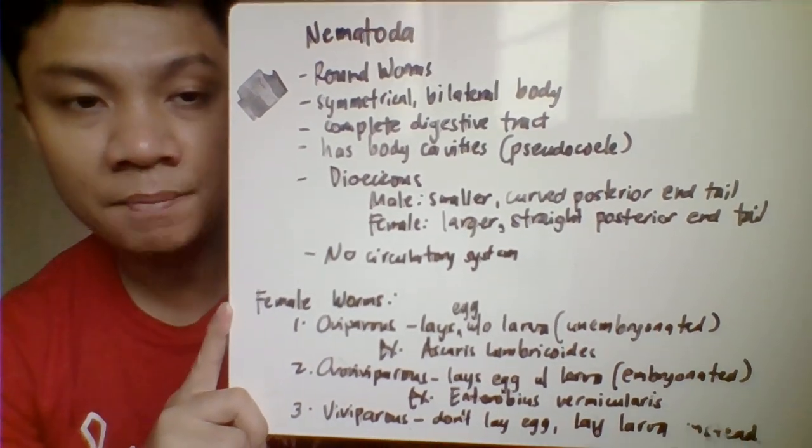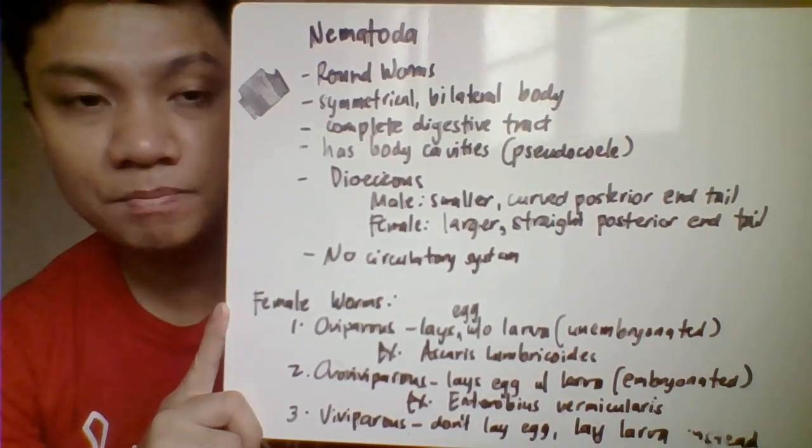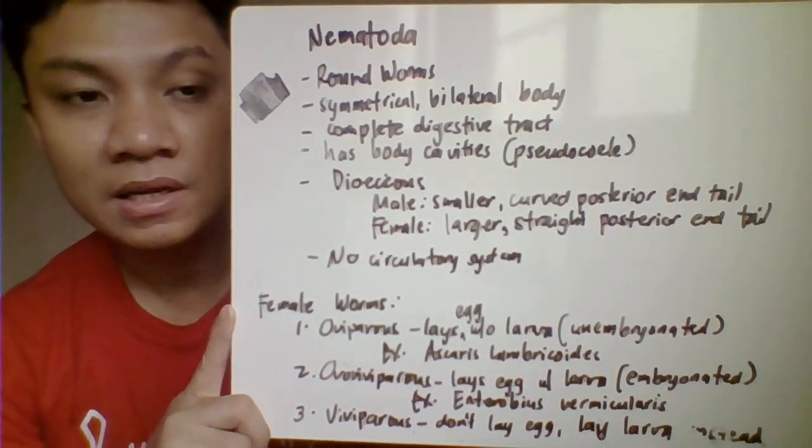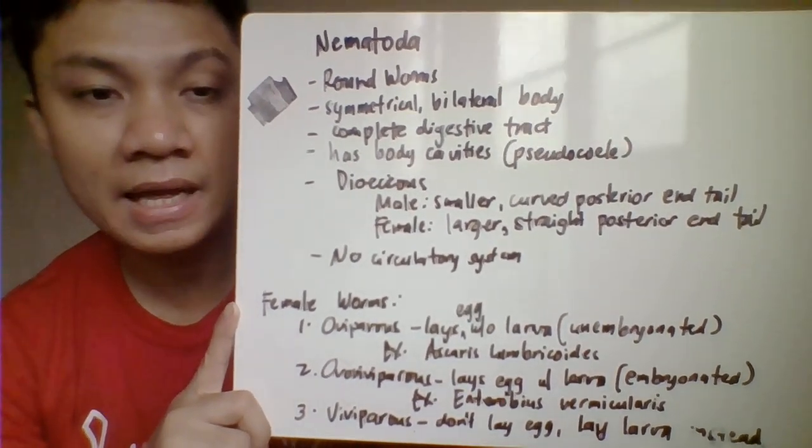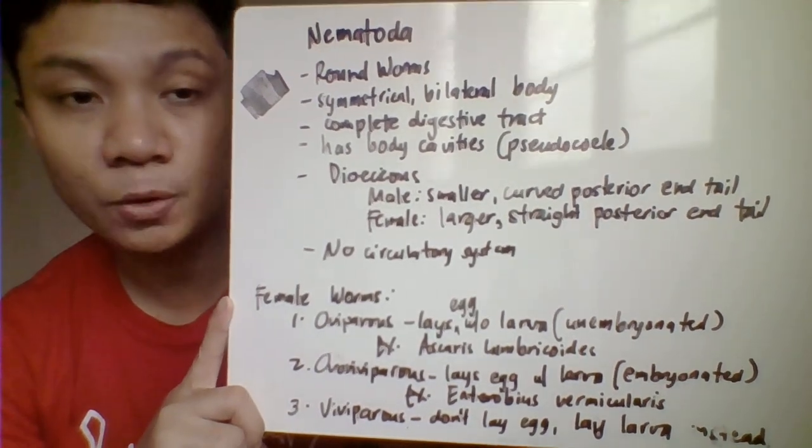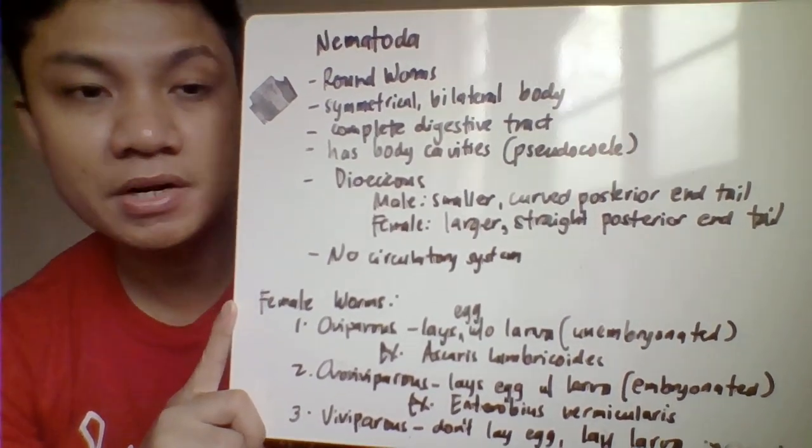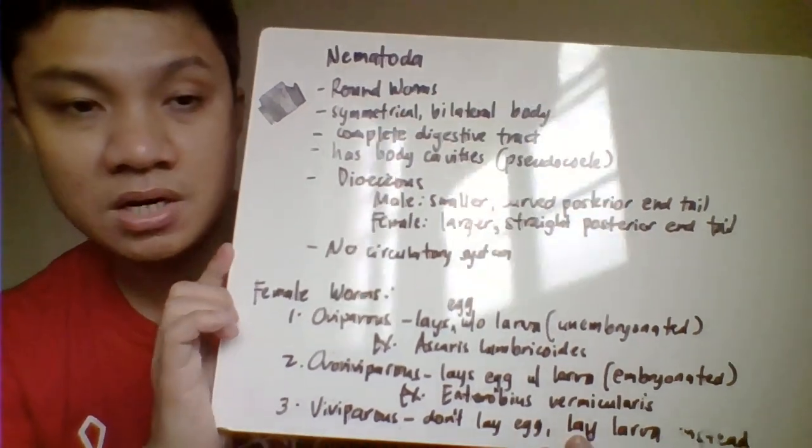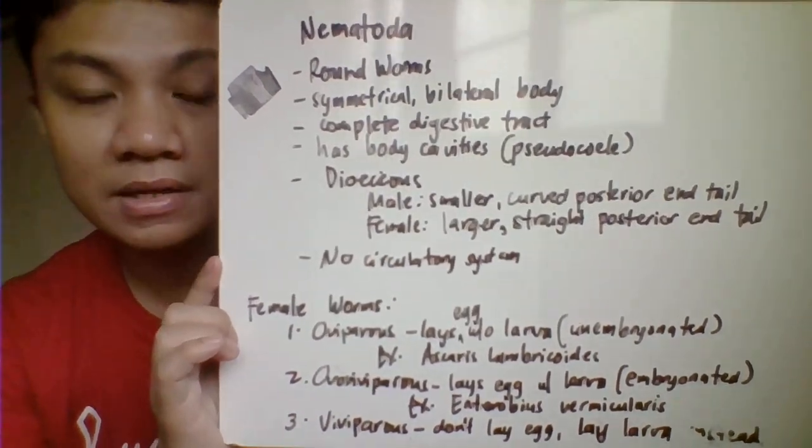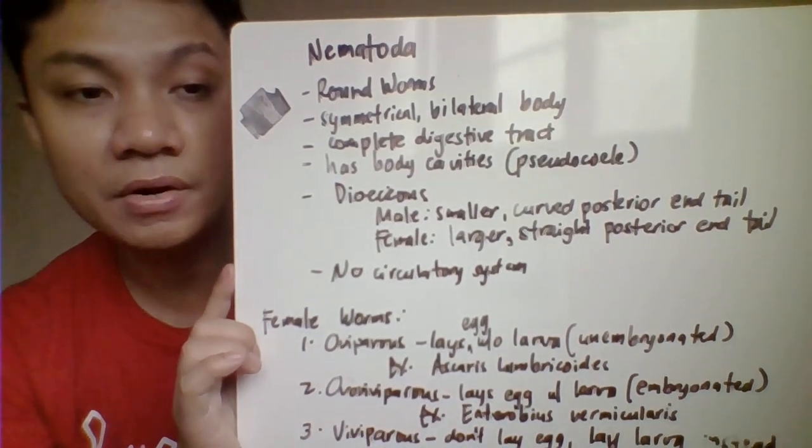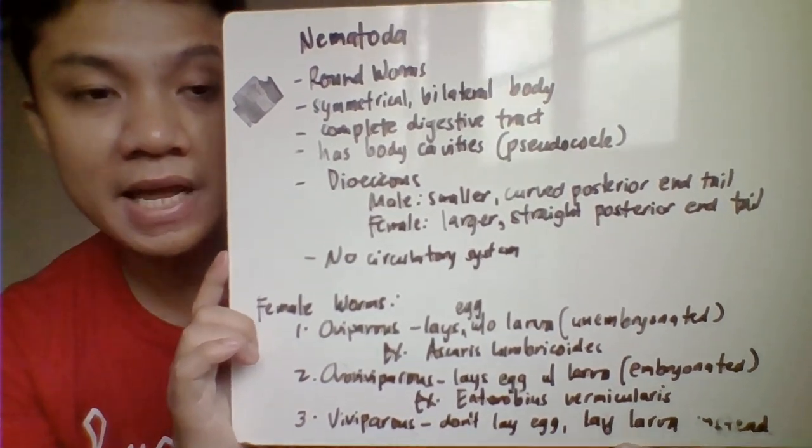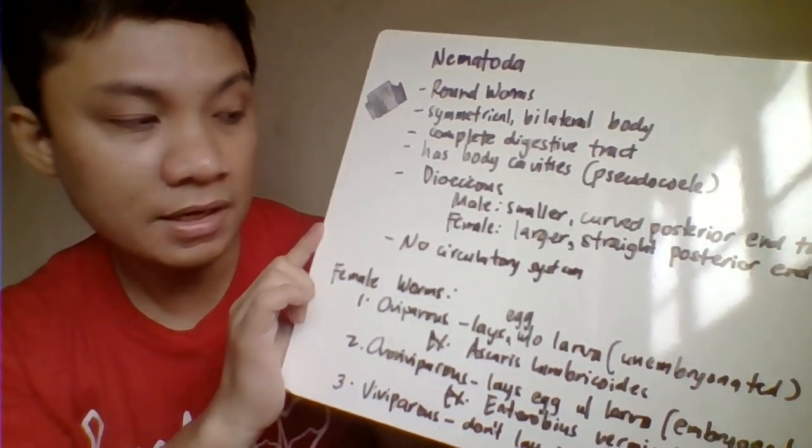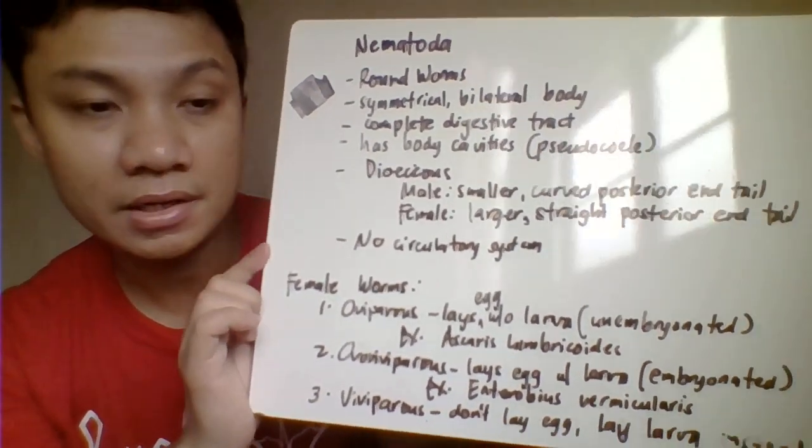For the general rule, adult male worms are much smaller compared to adult female worms. The posterior and tail of males are curved. For females, they are much larger and can be identified by their posterior and tail, which is straight and never curved. They don't have a circulatory system.